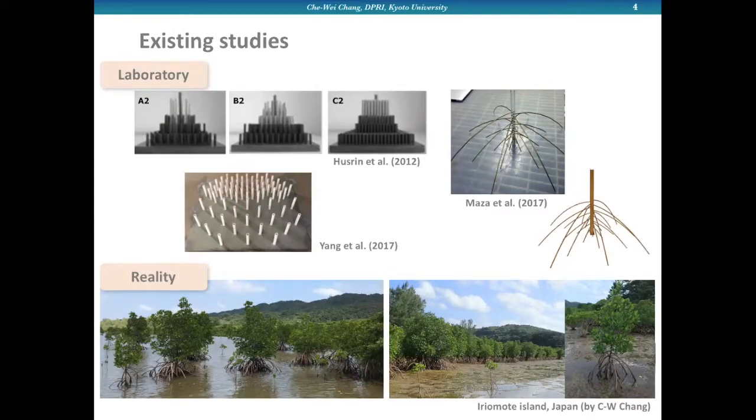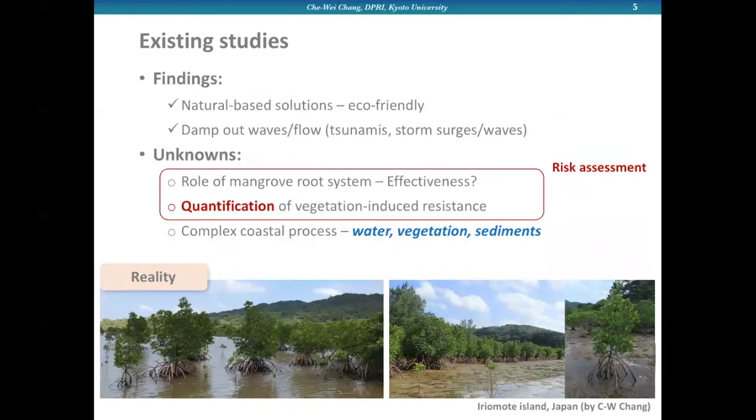There have been many previous works studying mangrove effects on wave attenuation using simplified or parameterized tree models. More recently, Maza et al. in 2017 and 2019 conducted experiments considering the specific features of mangrove species, particularly the prop root systems. From previous studies, we know that mangroves are eco-friendly and can damp out wave energy. But until now, there's still a lack of consensus about the quantification of mangrove effects.